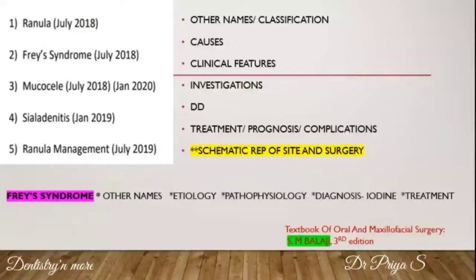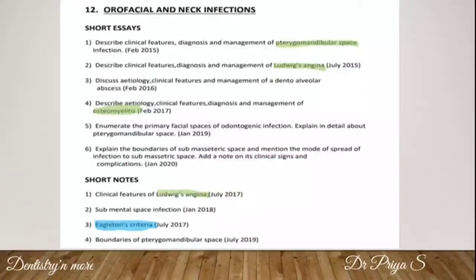Moving on to orofacial and neck infections, the repeatedly encountered questions are on pterygomandibular space infection, Ludwig's angina, and osteomyelitis. Equally important are all the primary and secondary spaces of the maxilla and mandible, cavernous sinus thrombosis, necrotizing fasciitis which is a complication of Ludwig's angina, cellulitis, and abscess.